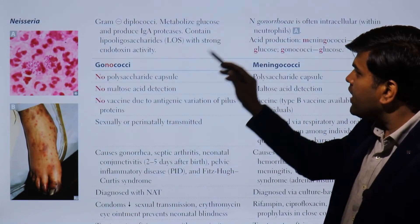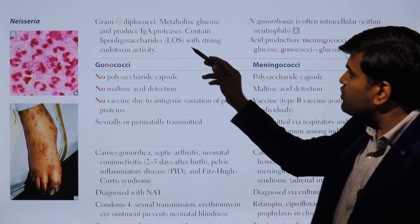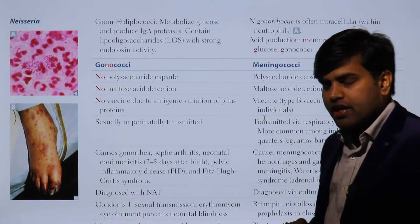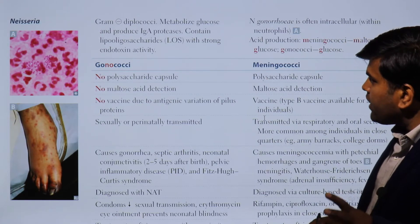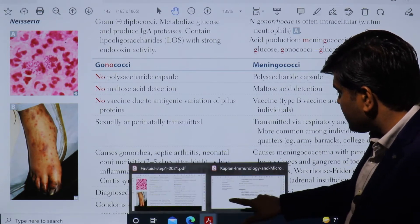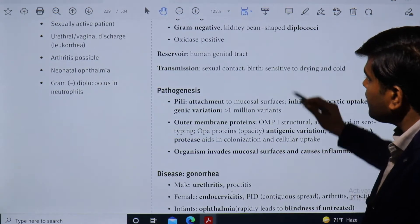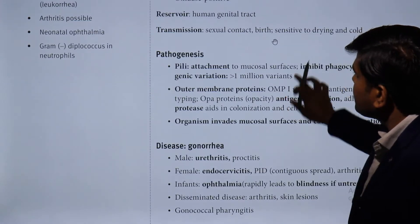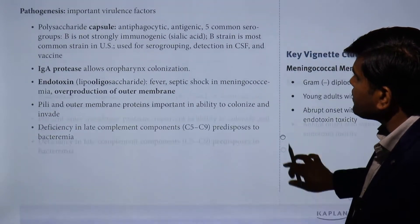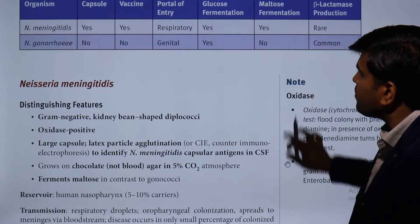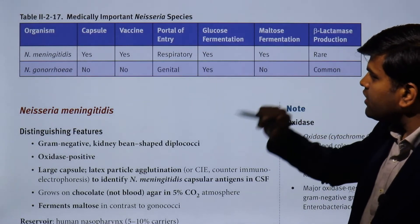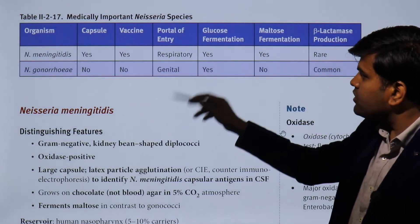N. gonorrhoeae are gram-negative diplococci that metabolize glucose and produce immunoglobulin A protease, and contain lipooligosaccharide with strong endotoxin activity. Looking at the Kaplan book, comparing the two Neisseria species: N. meningitidis has a capsule whereas N. gonorrhoeae does not. A vaccine exists for N. meningitidis but not for N. gonorrhoeae.